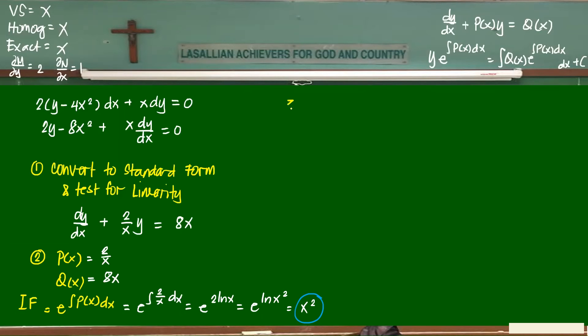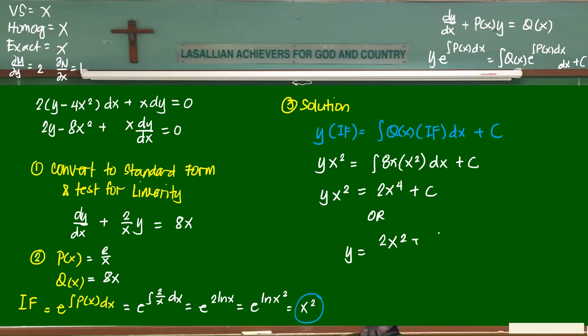And step number three, then, is the solution itself. And then the solution, what form would it take? It would take Y times the integrating factor equals the integral of Q(x) times the integrating factor with respect to X plus C. So what is y? It's just any y. What is IF? It's X². What is Q(x)? 8X multiplied by X², dx + C. So 8X³ becomes 2X⁴. Y = 2X² + C/X². So either of the two solutions.